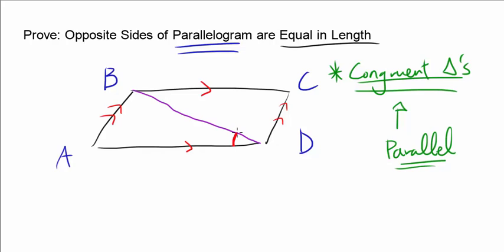First, realize that angle ADB and angle CBD are equal because they are alternate interior angles. Another thing to realize is that this angle and this angle are also alternate interior angles of the parallel sides AB and CD. So we have two pairs of equal angles.